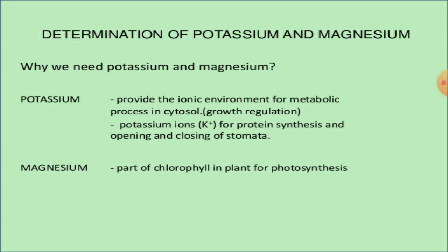Potassium provides the ionic environment for metabolic processes in the cytosol, including growth regulation, protein synthesis, and the opening and closing of stomata. Magnesium is a part of chlorophyll in plants and is essential for photosynthesis, making it important for plant growth and therefore included in fertilizers.